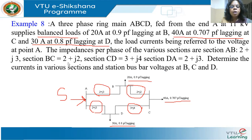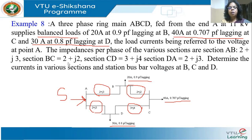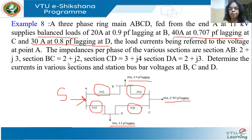Determine the current in the various sections — AB, BC, CD, and DA. And also determine the node voltages at B, C, and D. This is the problem. You can solve it using simple network theory.